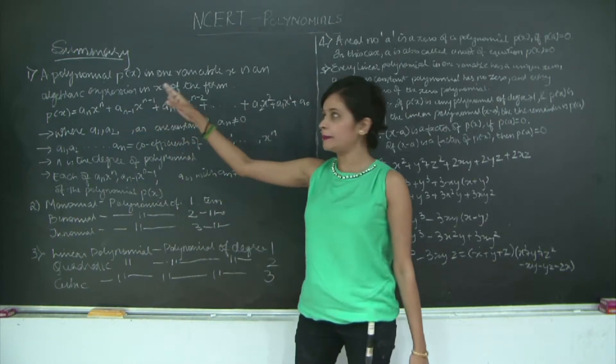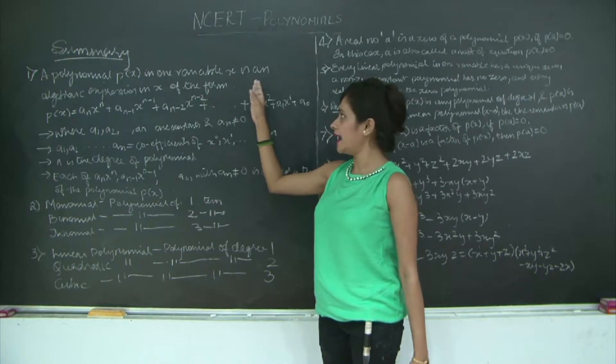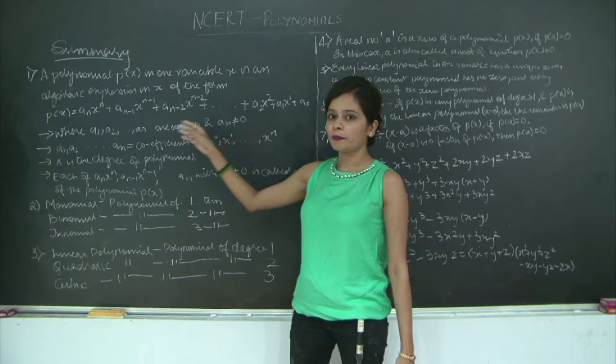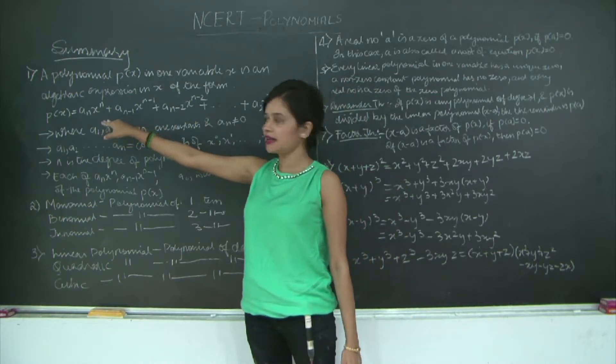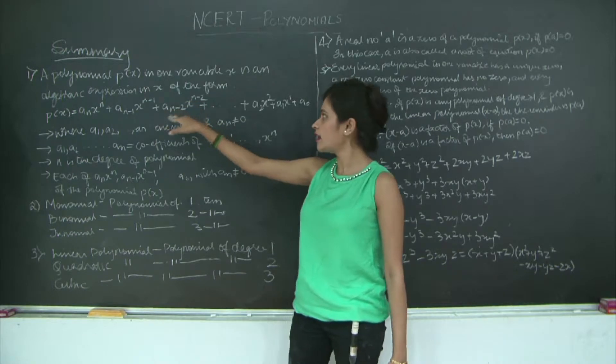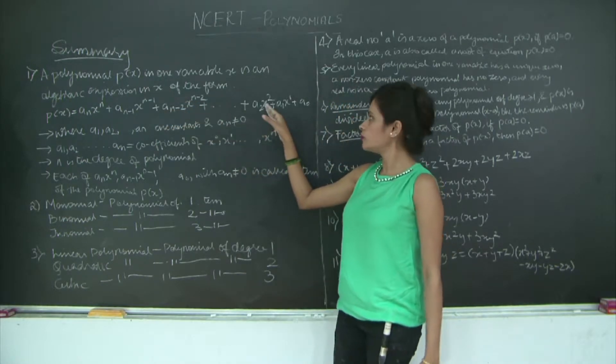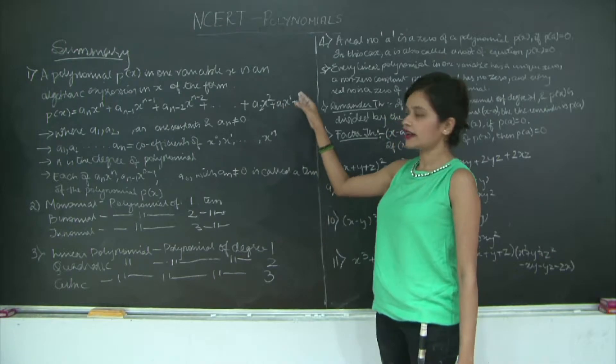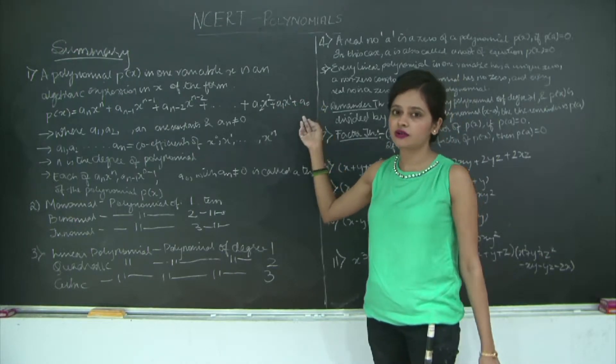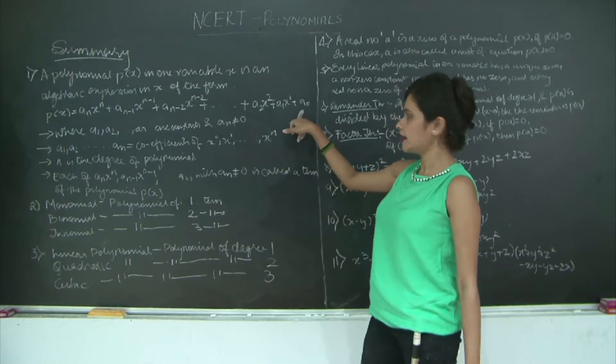The first point: a polynomial P(x) in one variable x is an algebraic expression in x of the form P(x) equals aₙ·xⁿ plus a₍ₙ₋₁₎·x⁽ⁿ⁻¹⁾ up to a₂·x² plus a₁·x plus a₀·x⁰. x⁰ is 1, that's why a₀.